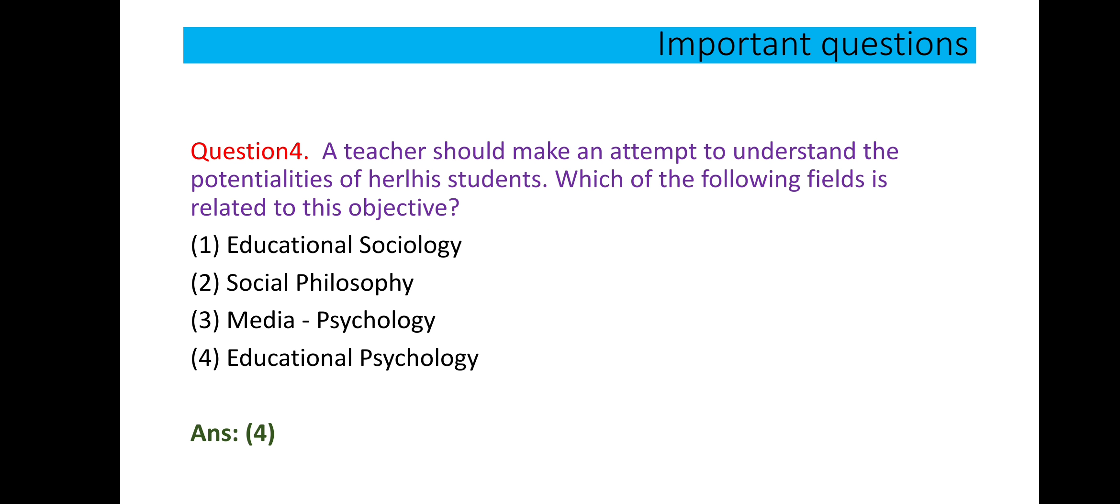Question number 4: a teacher should make an attempt to understand the potential of his or her students. Which of the following fields is related to this objective? Read the question carefully - a teacher and the student, so this is educational, they are talking about education, right? So we have two options: option number one education sociology and education psychology, fourth option. So this is clear that they are talking about education. Options 2 and 3 are incorrect.